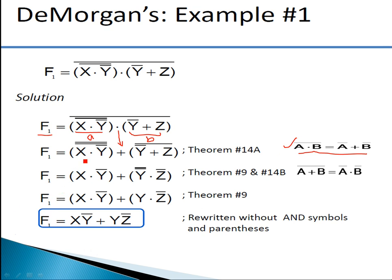Next, x · ȳ double bar — the double bar cancels out because ā̄ = a. So x · ȳ remains as it is, plus (ȳ + z)̄ is still there. Now considering ȳ as variable 'a' and z as variable 'b', we have (a + b)̄, so we can apply De Morgan's second theorem — the complement of a sum equals the product of the individual complements.